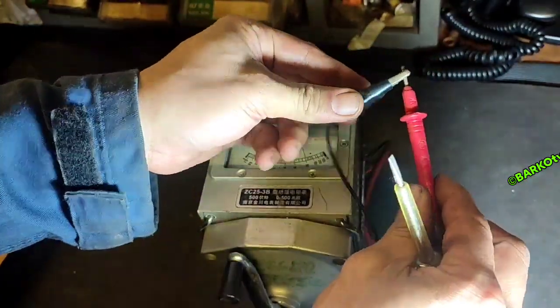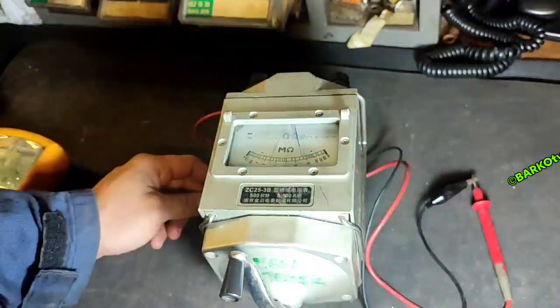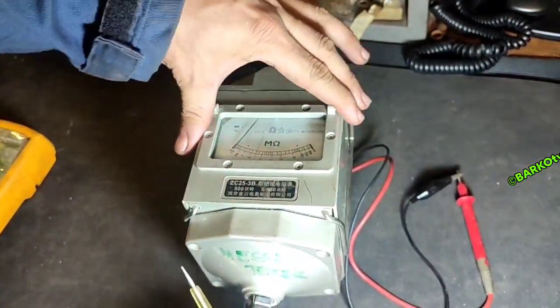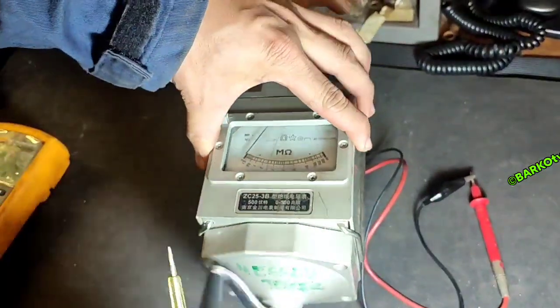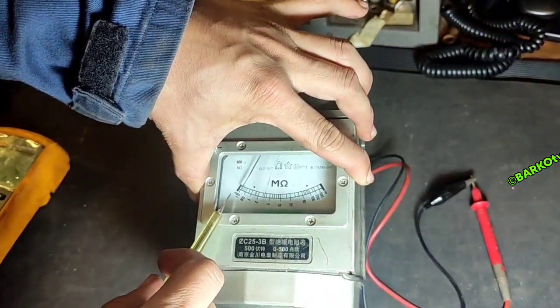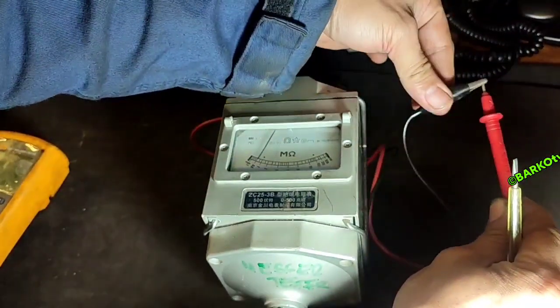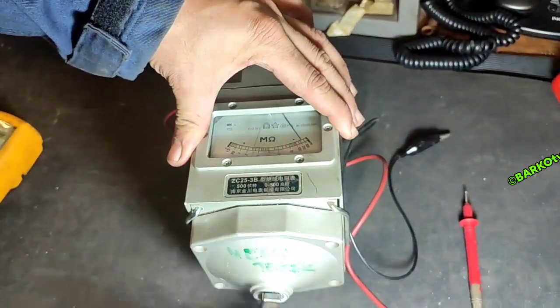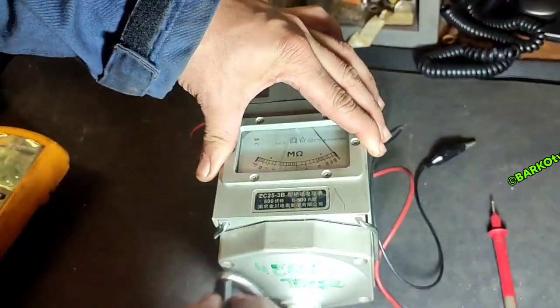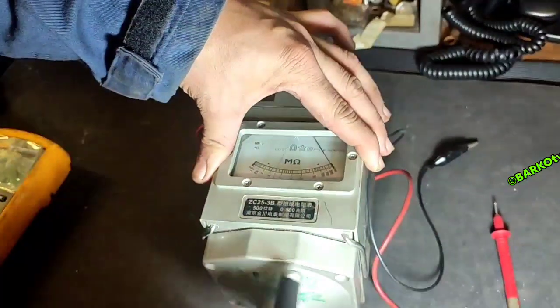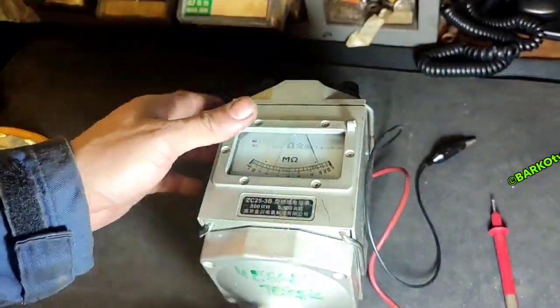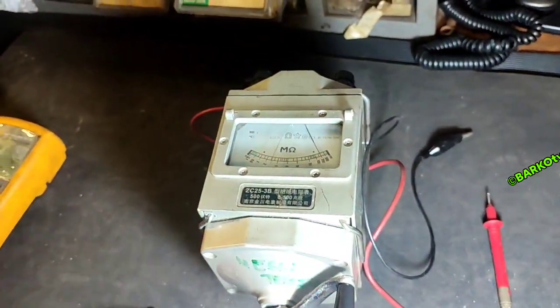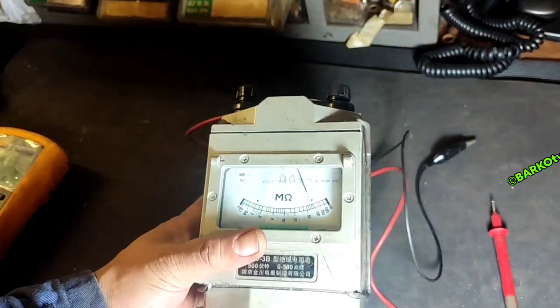And then connect the two rods or the two test probes. Then you crank it. As you can see, the reading is zero. This IR tester also reacts - the reading is reliable. Again, separate the two connectors, the readout is greater than 500 mega ohms. This unit is good.